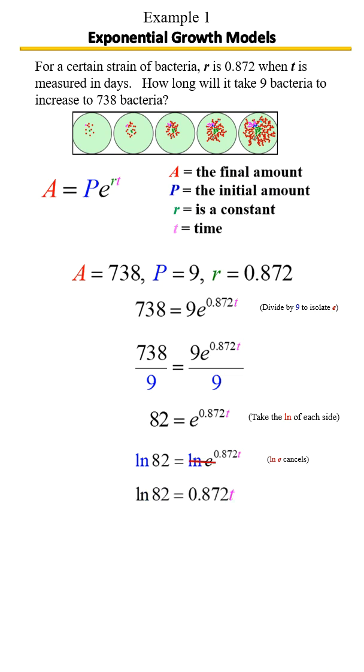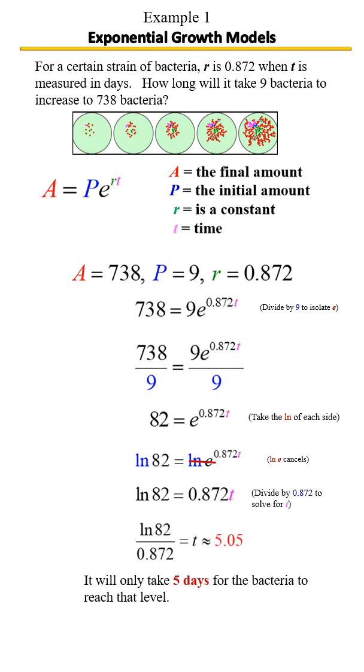We're going to bring down what is left. Last step to solving for t: we're going to divide by 0.872. Whatever you do to one side, you do to the other. If you get your scientific calculator and do ln 82 divided by 0.872, you should get approximately 5.05. We're talking about days here, so if we round to the nearest whole day, that would mean it will take about 5 days for the bacteria count to reach that level.